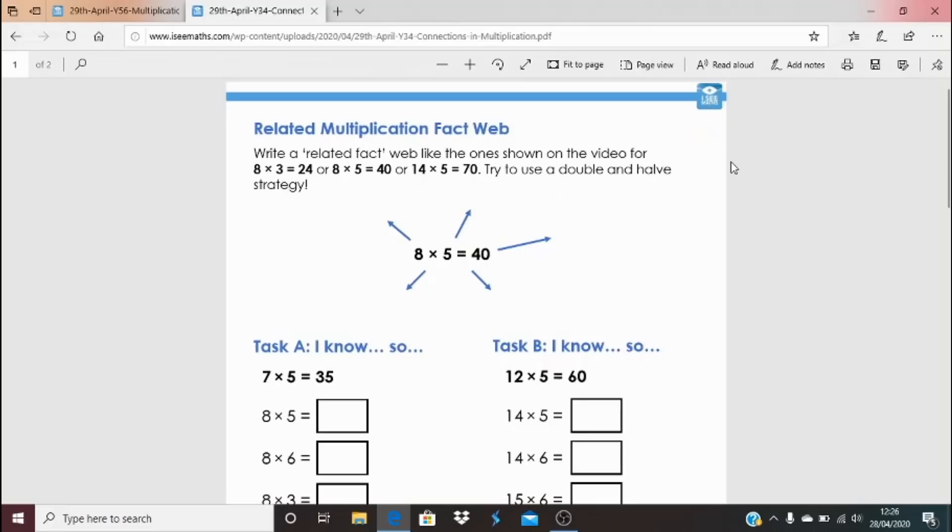So things that you can do to help you to do that are the related multiplication fact webs. So here are three examples of multiplication facts you could start from and have in the middle of your web. See if you can come up with different related facts that link to those multiplication facts. You might use that doubling and halving strategy or those adjustments. So as many number sentences as you can.